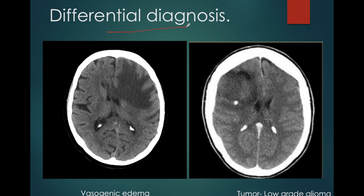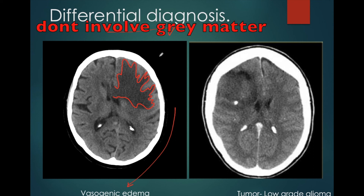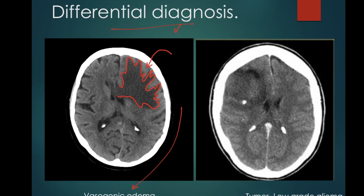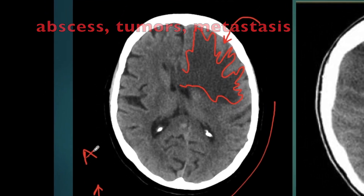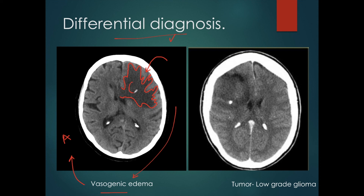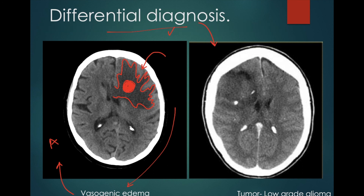There are certain differential diagnoses of acute stroke which are fairly common. One of them is vasogenic edema. Vasogenic edema is characterized by finger-like projections in the white matter. We can see the finger-like projections in the left frontal white matter — this is a case of vasogenic edema. In contrast to stroke, vasogenic edema does not involve the gray matter, whereas stroke involves both gray and white matter. Vasogenic edema is usually a sequela of abscess, underlying tumors, or metastasis. If we see vasogenic edema, we should perform a contrast study which can find the cause of the edema by contrast enhancement.